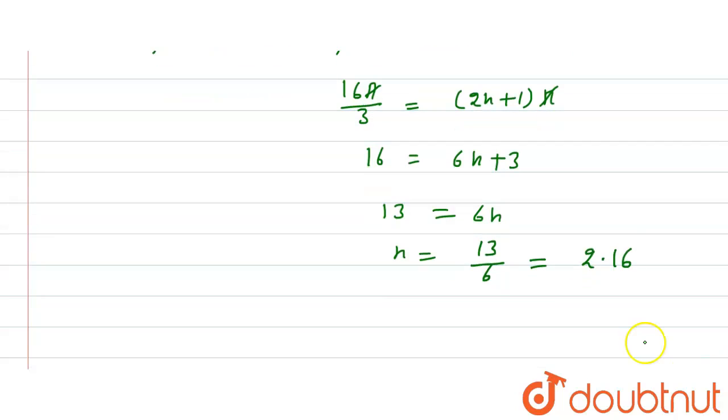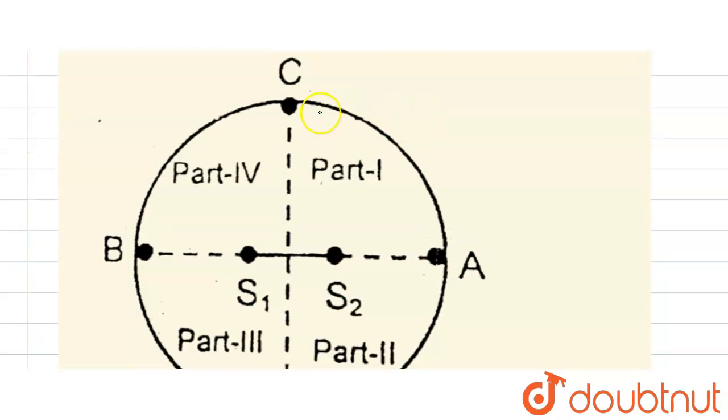And value will come 13/6, so that is equal to 2.16. So now here we take integral value, means n is equal to 2 minima.